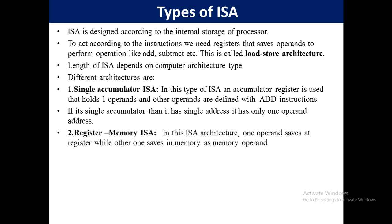The second architecture is register-memory ISA. In this ISA architecture, one operand is saved in a register while the other is saved in memory as the memory operand. This is how ISA works in the register-to-memory ISA.